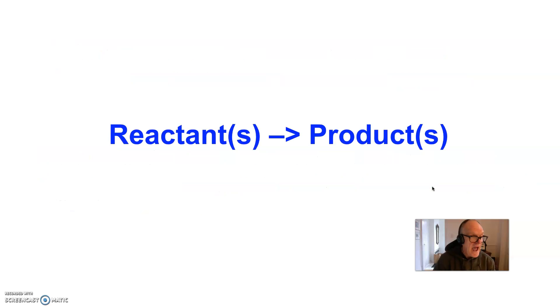So we can say that reactants yield products. Reactants turn into products. Here we have the s's in parentheses because sometimes there's only one reactant or one product.